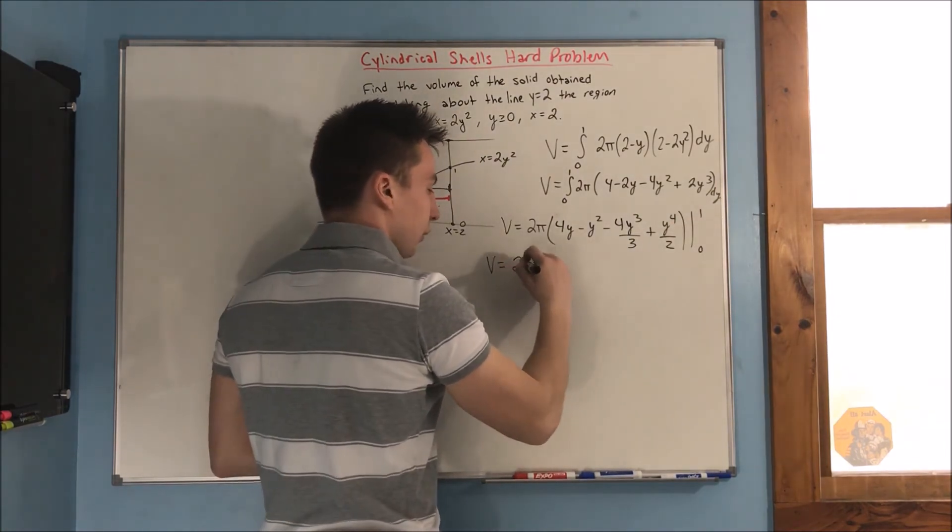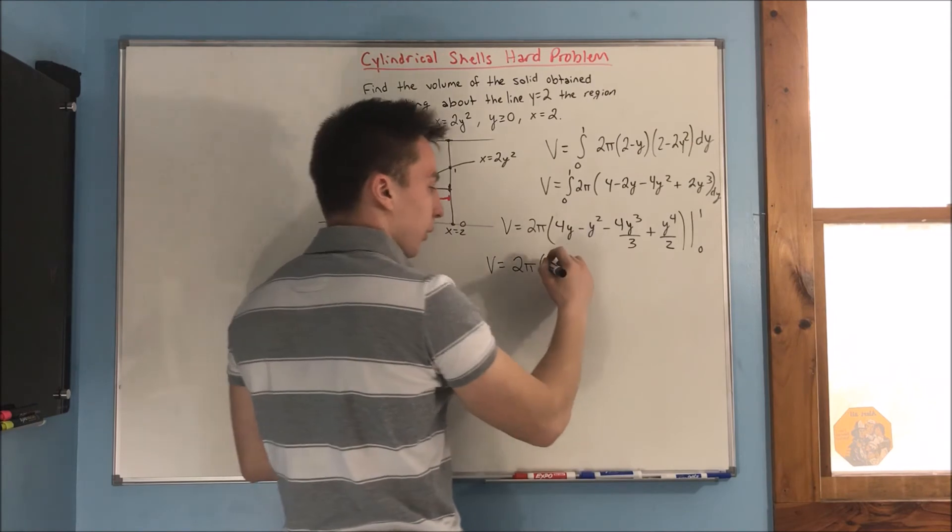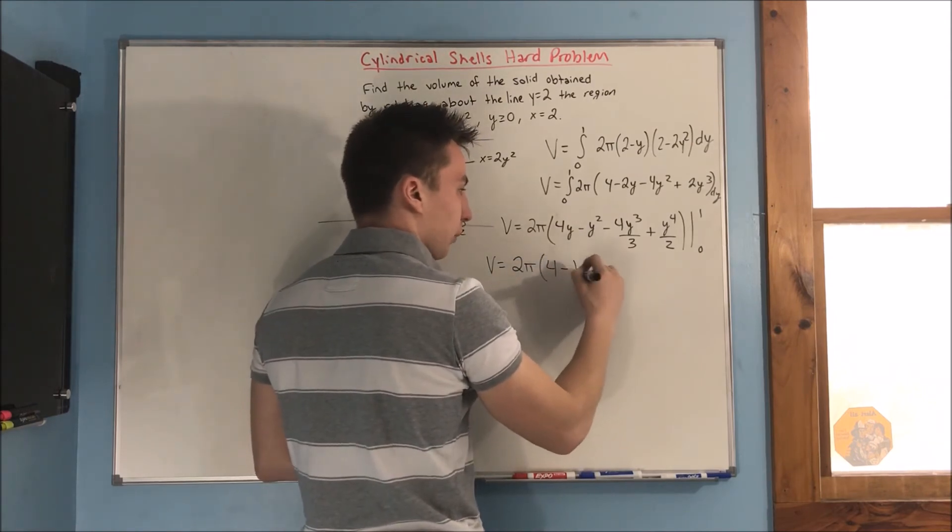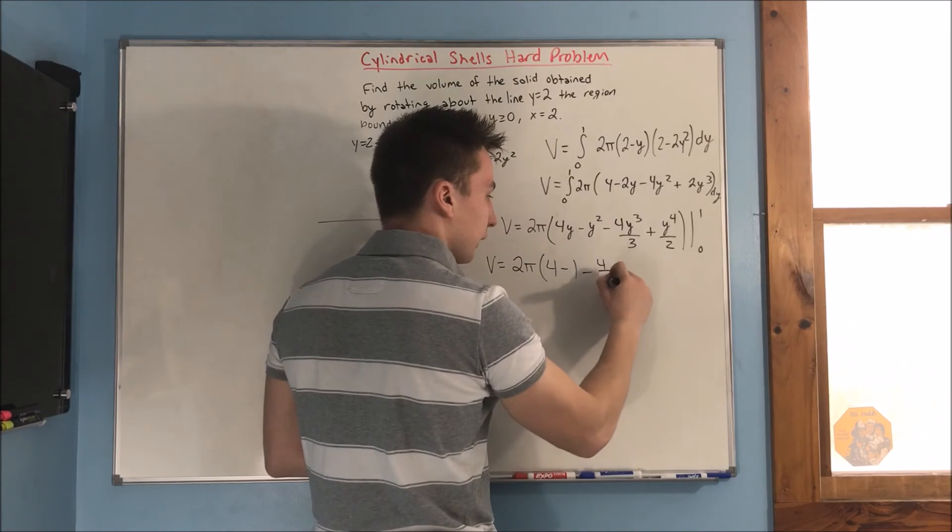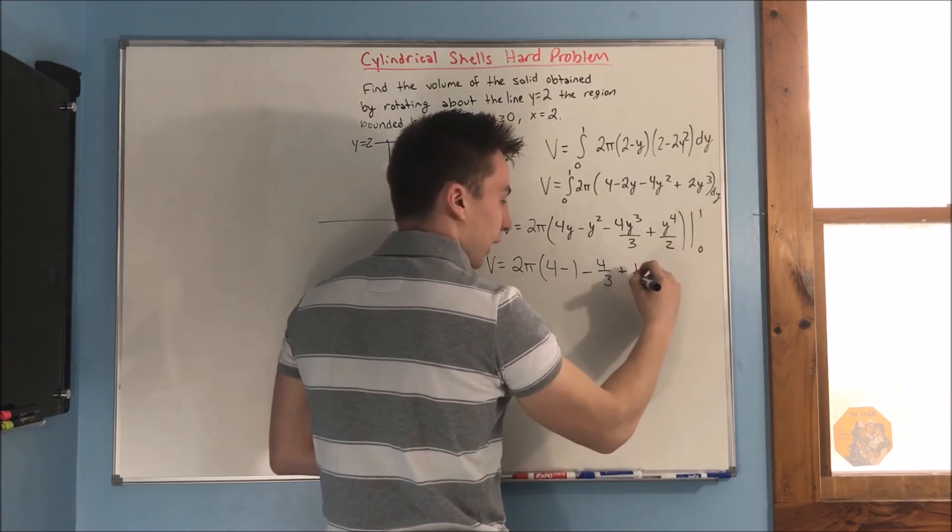That's going to be volume is equal to 2 pi times, when we substitute it into 1 here, we're going to get 4 minus 1 minus 4 thirds plus 1 half.